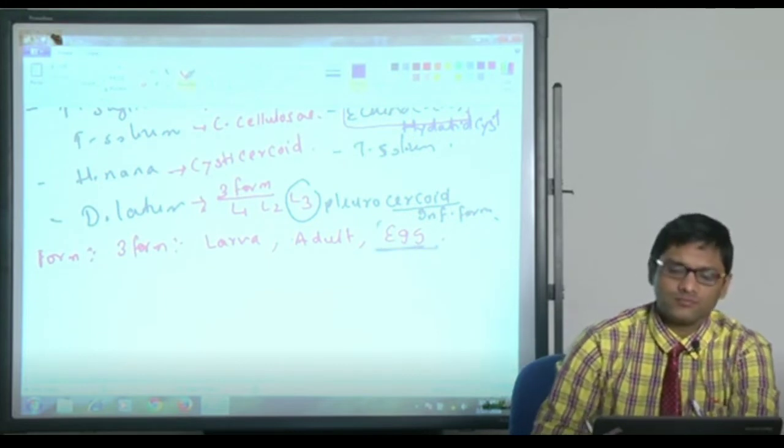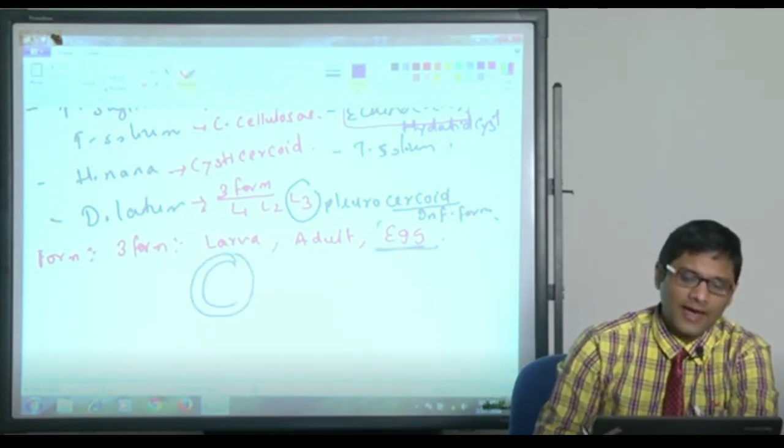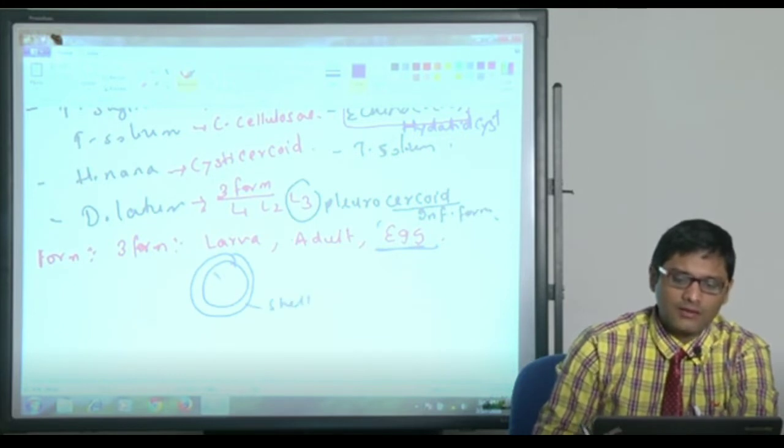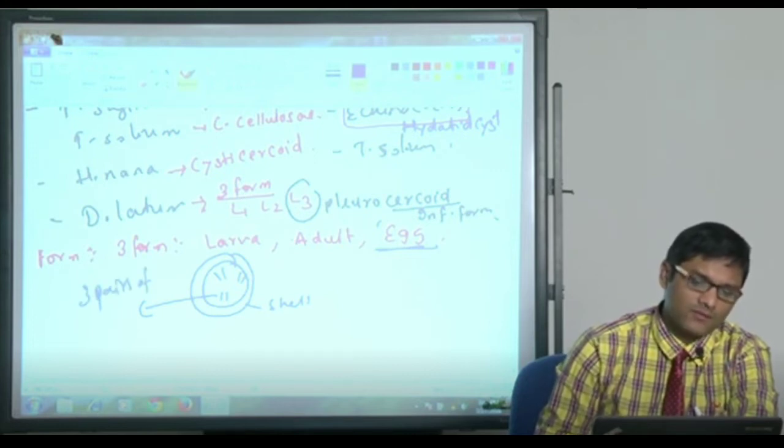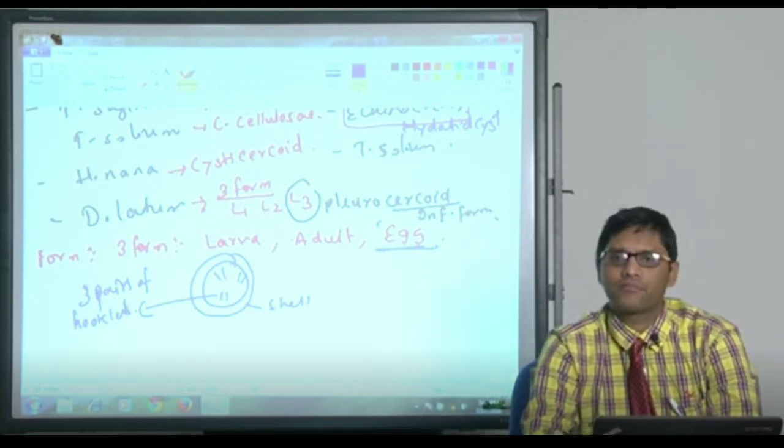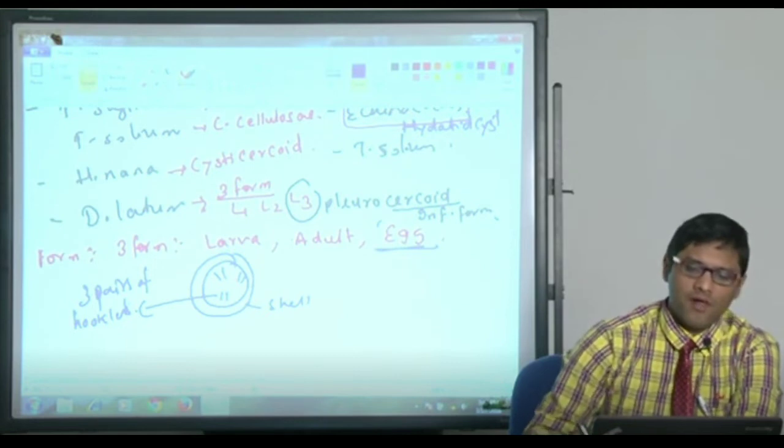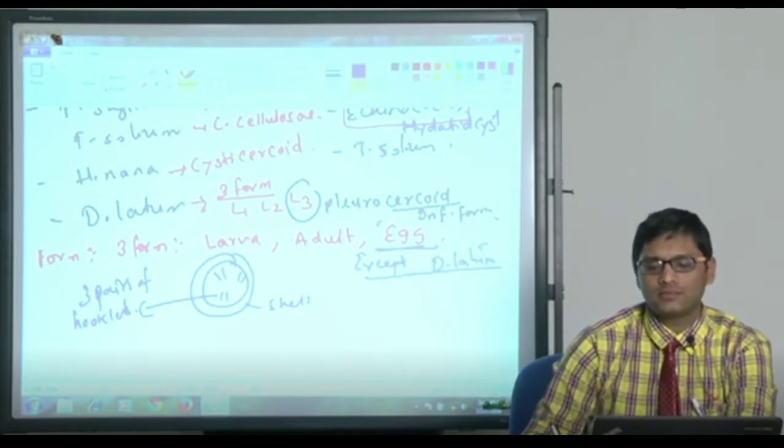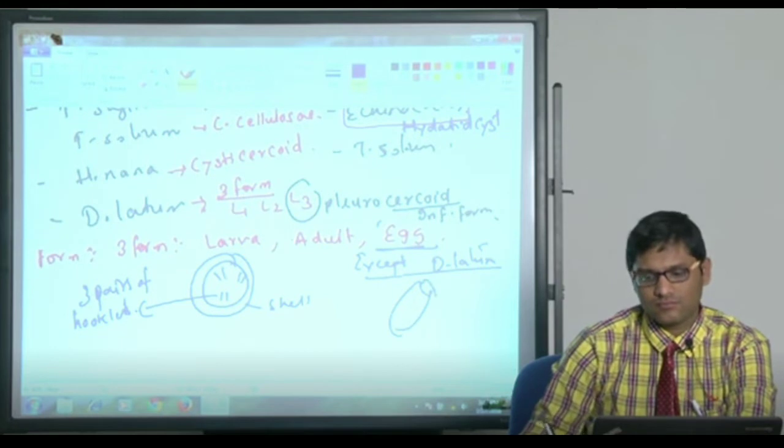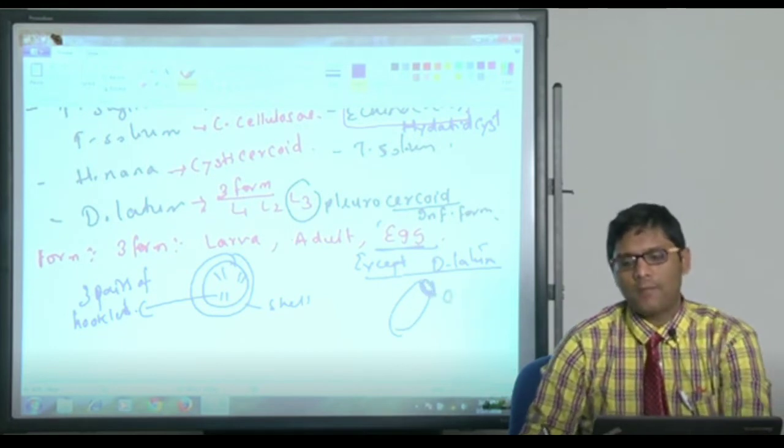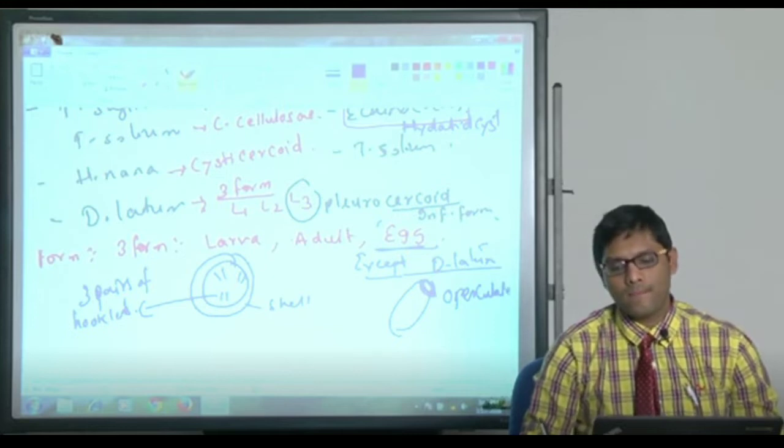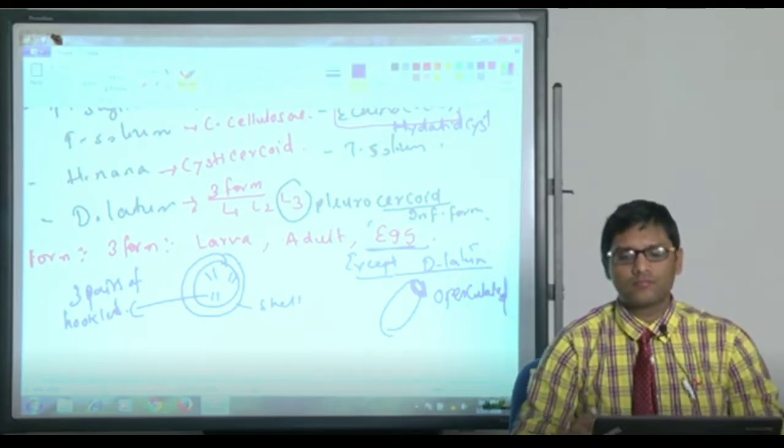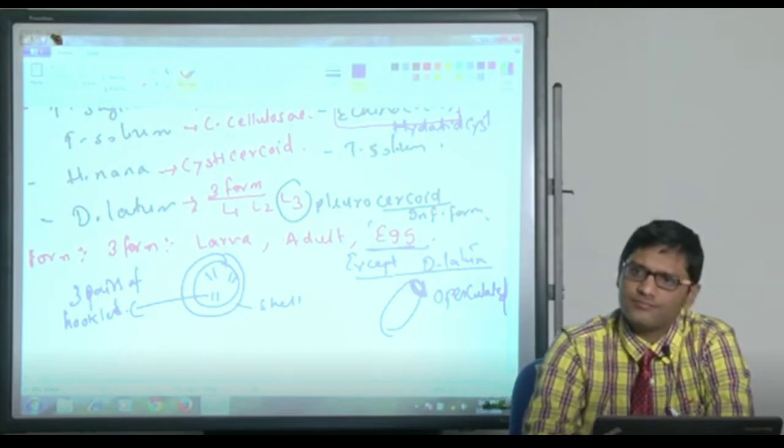Coming to egg, most of the Cestodes have an egg shell and three pairs of hooklets, except D. latum. D. latum, the egg is operculated. Operculated means there is a lid. It has a lid, operculated egg.